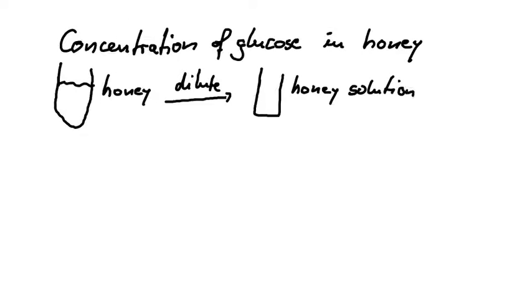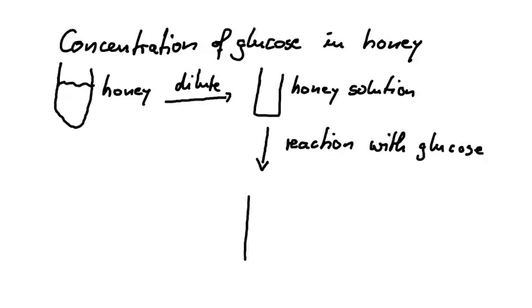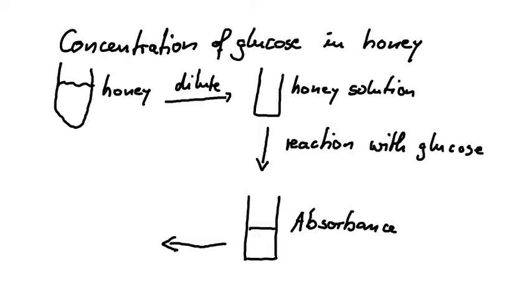We would carry out a reaction where something reacts with the glucose in the honey, and this might then lead to a color change — a different color — giving us an absorbance that we can measure in the spectrophotometer. This absorbance depends on the concentration of glucose, and from this we are trying to figure out the concentration of glucose in our honey sample.